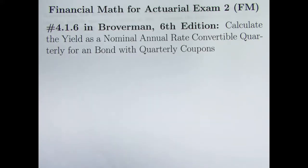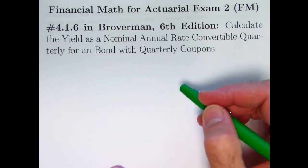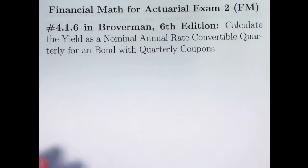Problem 4.1.6 from Broverman 6th edition is unusual in that the bond we're considering has quarterly coupons instead of the usual semi-annual coupons.